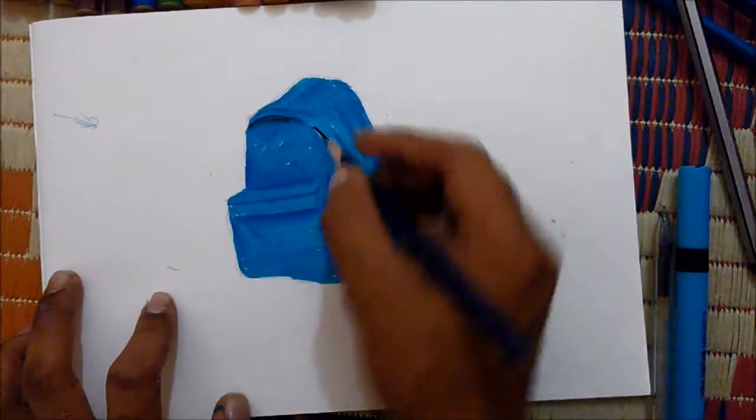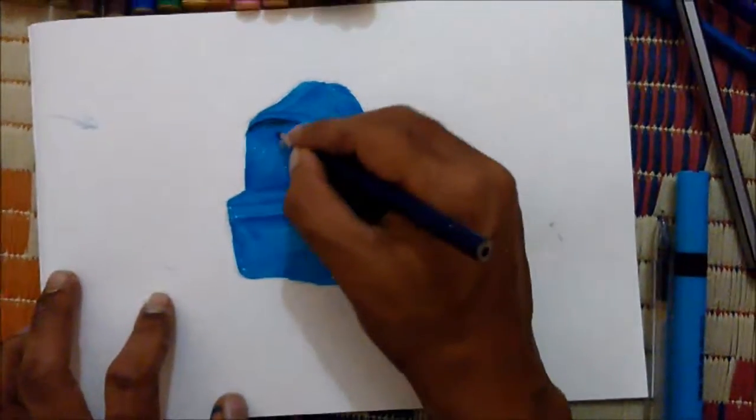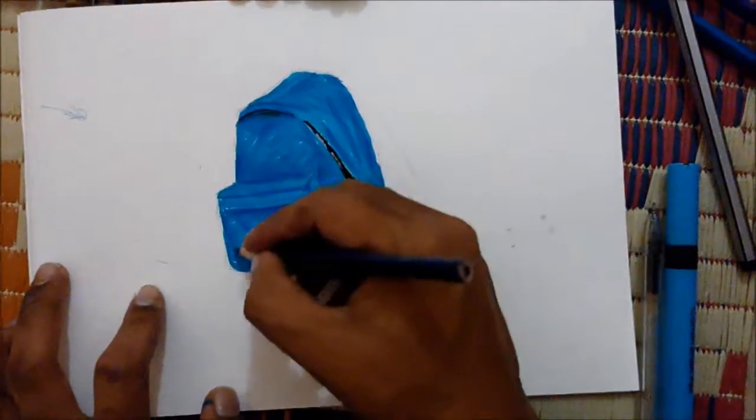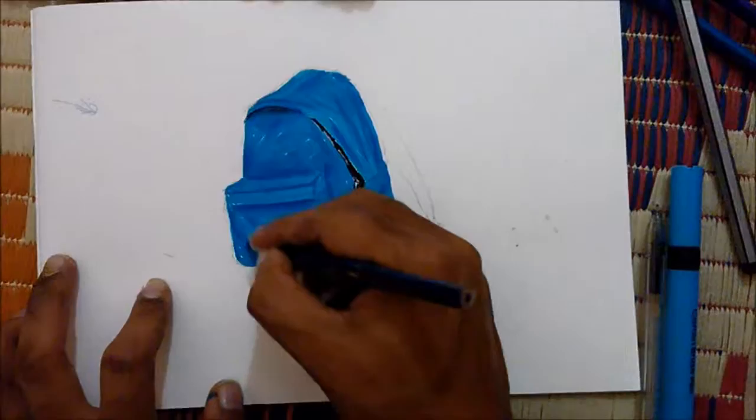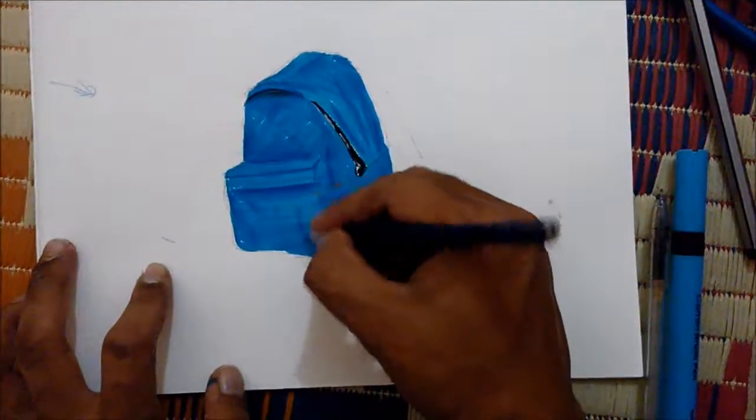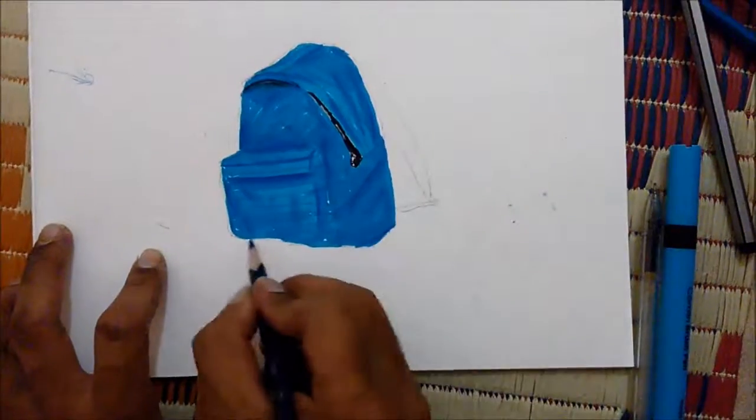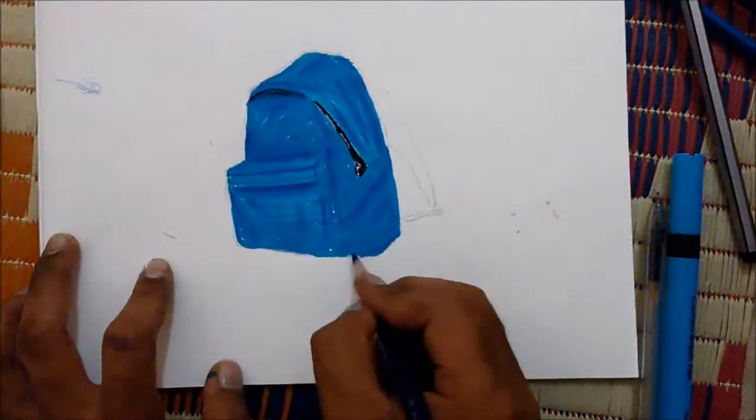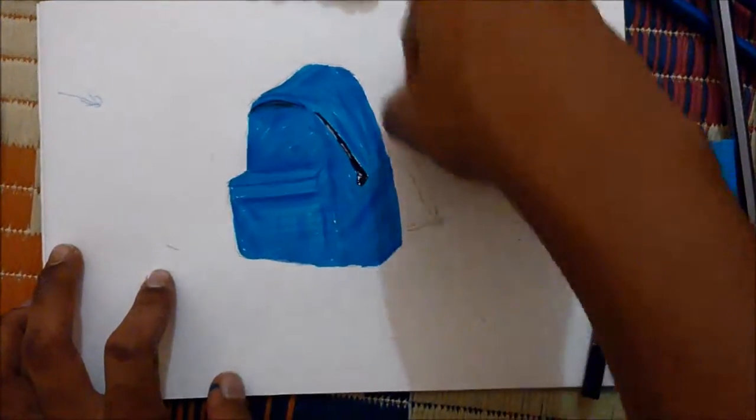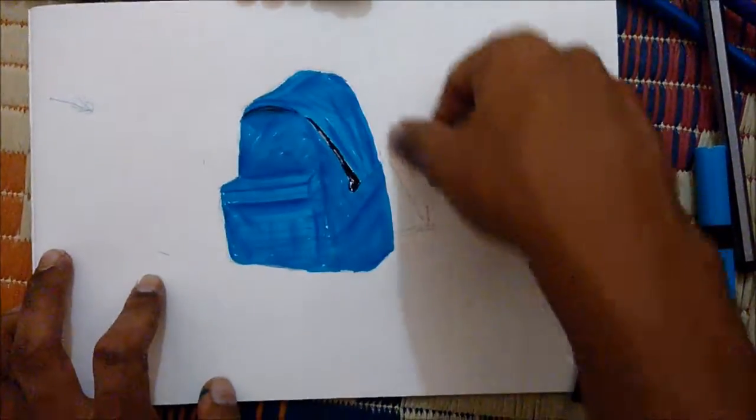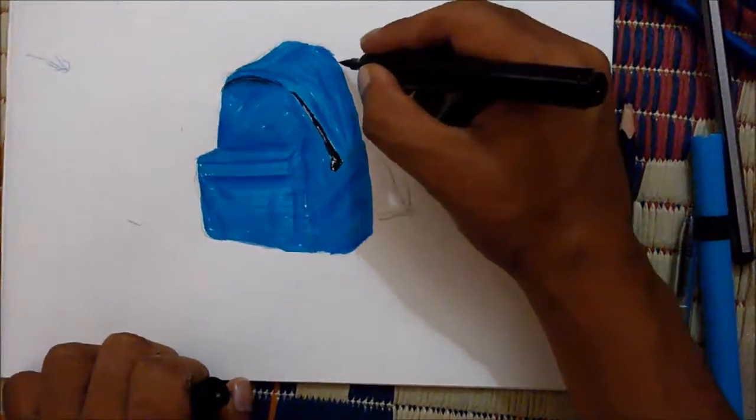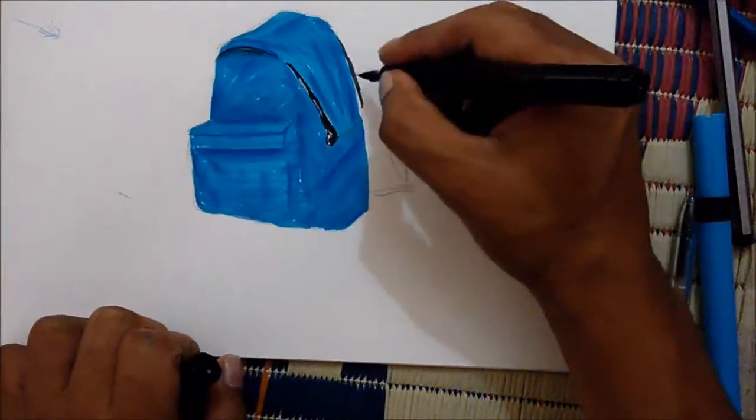Blend wherever possible. Next, we are going to shade this one, this belt. For that, take your black color. Give a nice shading color.